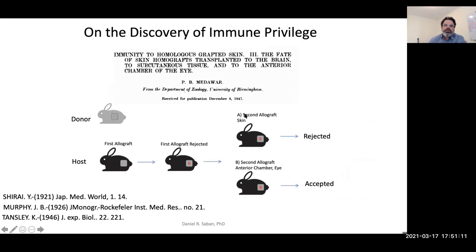Now, let's dive into a very important experiment published by Peter Medawar in 1947. What he did was to take skin from a certain strain of rabbit and transplant it in an allogeneic fashion to a cohort of rabbits, allowing them to reject the graft, essentially priming the immune system against that graft. He then had two cohorts: one received the second allograft in the skin — you would anticipate that rabbit to reject it in a faster fashion — and the other cohort received that graft in the anterior chamber of the eye instead. It turned out that those grafts were accepted as opposed to rejected.